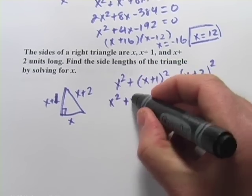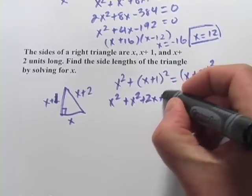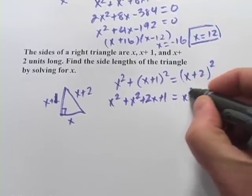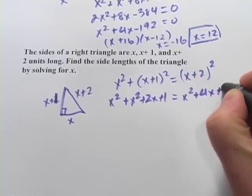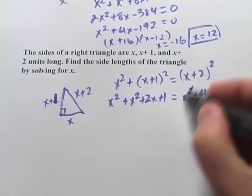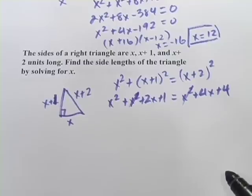We've got our x squared plus x squared plus 2x plus 1 equals x squared plus 4x plus 4. And let's see here. This x squared and this x squared can go away.